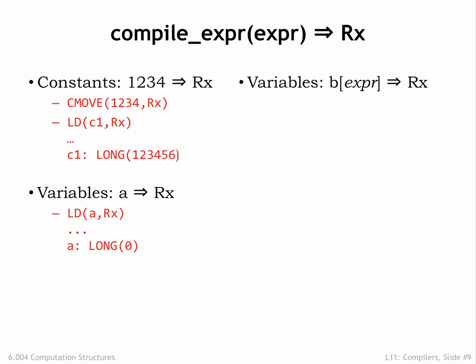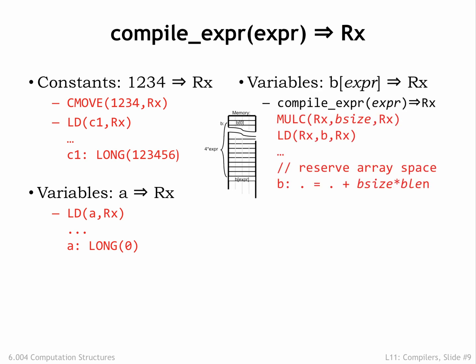Performing an array access is slightly more complicated. Arrays are stored as consecutive locations in main memory starting with index 0. Each element of the array occupies some fixed number of bytes. So we need code to convert the array index into the actual main memory address for the specified array element.